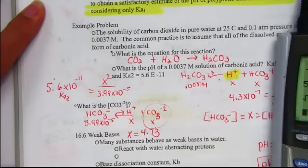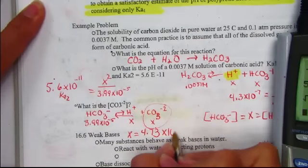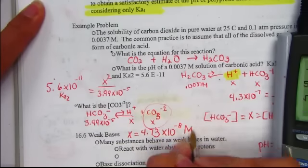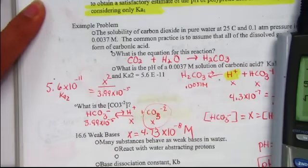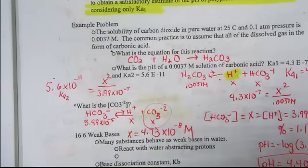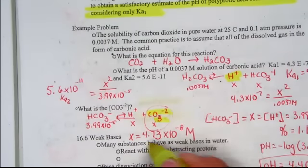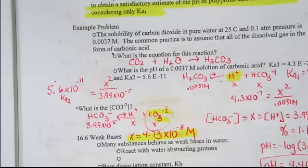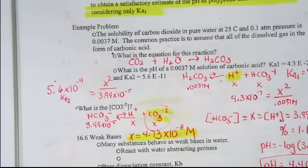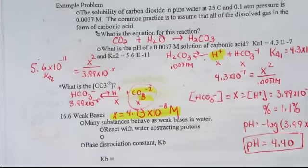4.73 times 10 to the negative eighth molar units is the concentration of the carbonate. Carbonate ion is what we've been asked to solve for, CO3-2, its answer of 4.73 times 10 to the negative eighth.